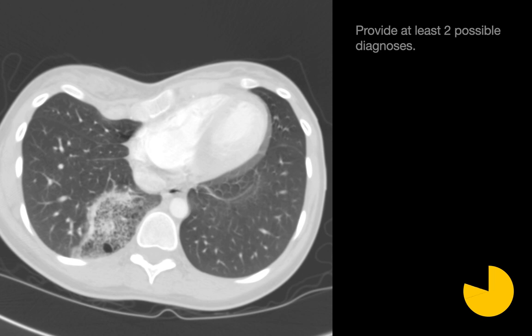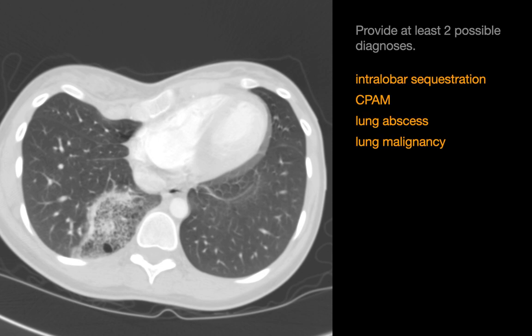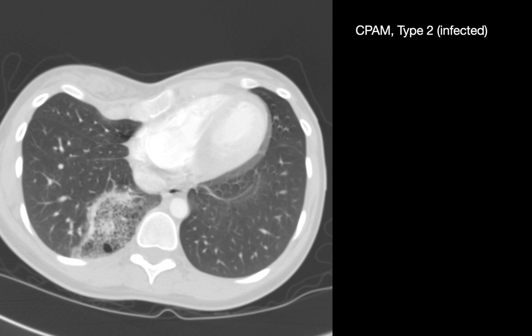Provide at least two possible differential diagnoses. Within the right lower lobe, there's a region of bubbly lung that reminds us of a dishwashing sponge. The two primary differentials are an infected intralobar sequestration or an infected CPAM. It's difficult to differentiate without visualizing a systemic artery. Two additional differentials to consider are a lung abscess or lung malignancy — specifically a lepidic subtype adenocarcinoma, which can sometimes look similar. This particular patient had a type 2 CPAM that was infected.